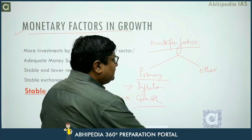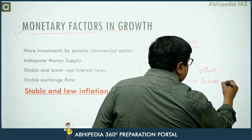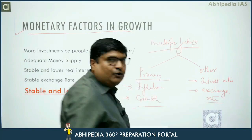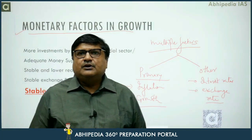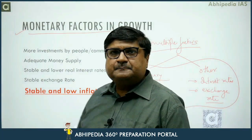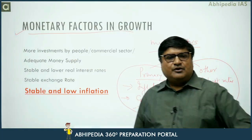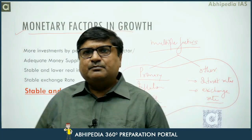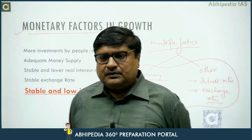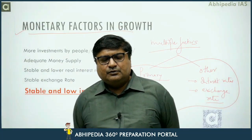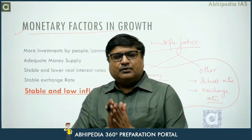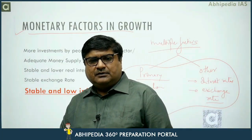And other objectives are keeping the interest rates under control and keeping the exchange rate under control — foreign exchange rate ko control mein rakhna, aur interest rate ko control mein rakhna. So ultimately, the monetary policy was oriented towards all these factors. Usko multi-factor monetary policy bolte the pehle. Thus, the monetary policy was a multi-factor monetary policy, and RBI used to take into account all these factors in proposing a monetary policy.